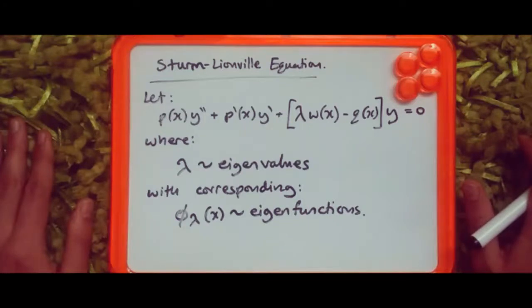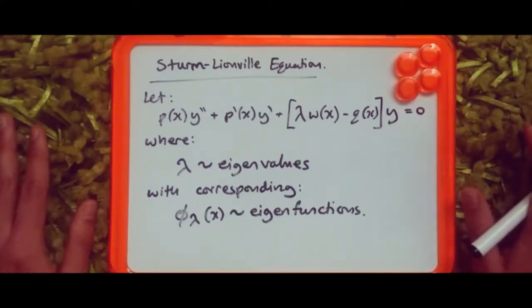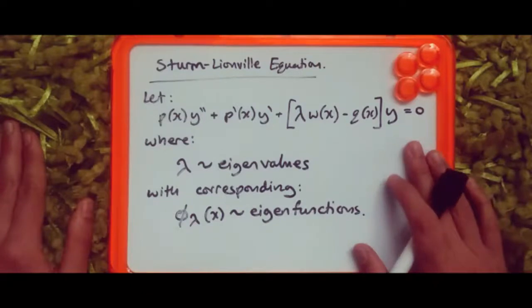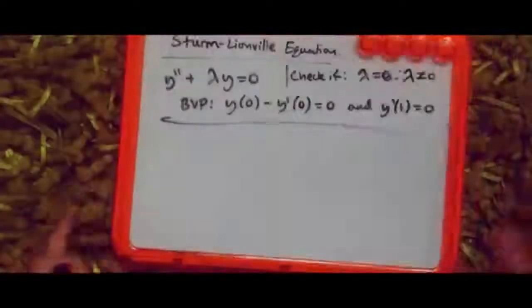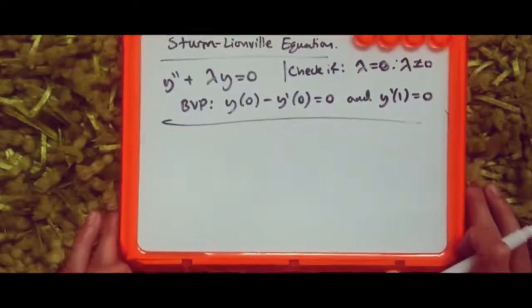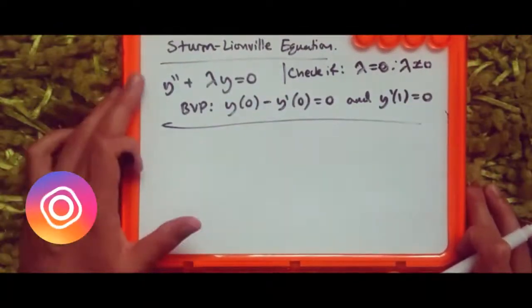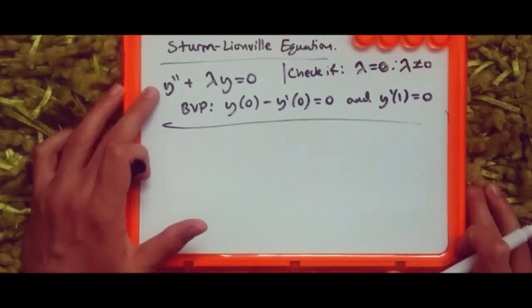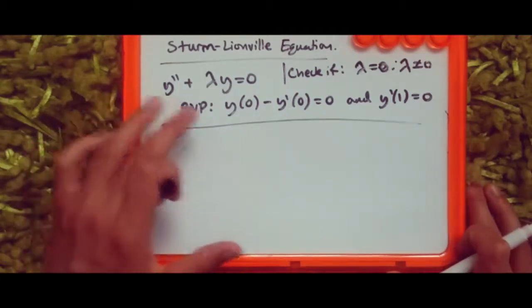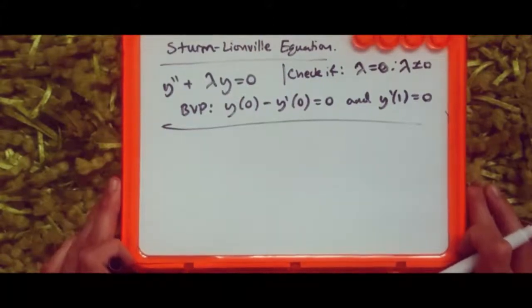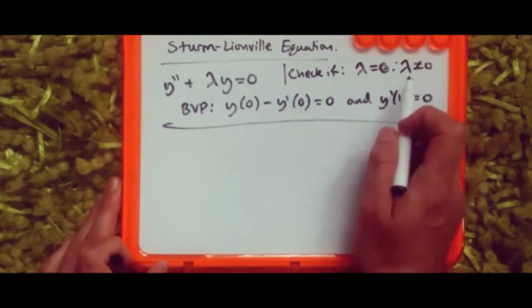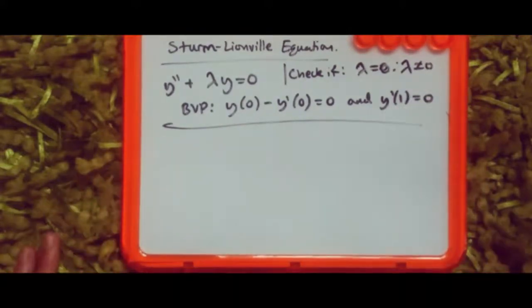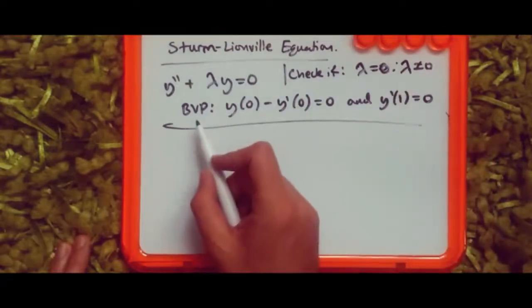We'll look at a simple example to calculate the respective eigenvalues and check whether they exist. The equation is the second derivative of y with respect to x plus lambda times y equals zero. Our objective is to check whether any eigenvalues exist for the case lambda equals zero and lambda not equal to zero.